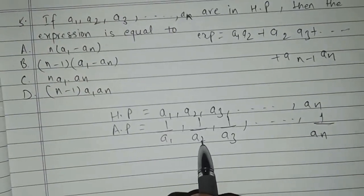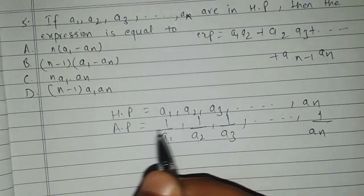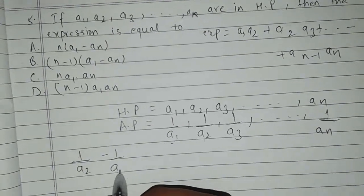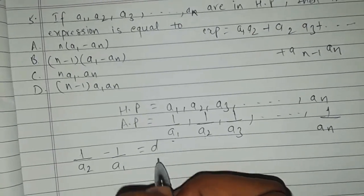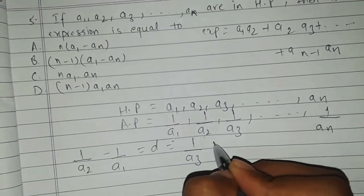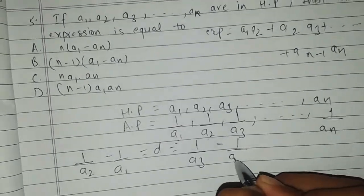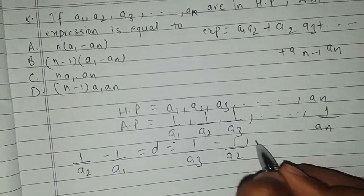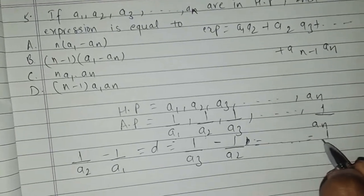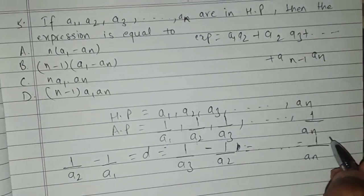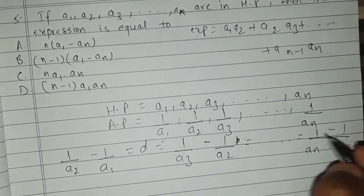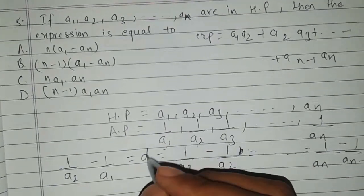Let us find out the difference between two terms of this Arithmetic Progression. We have 1/a2 minus 1/a1 equal to d, the common difference. Similarly, 1/a3 minus 1/a2 is also equal to d. Going on like this, the difference of 1/an minus 1/a(n-1) is also equal to d.